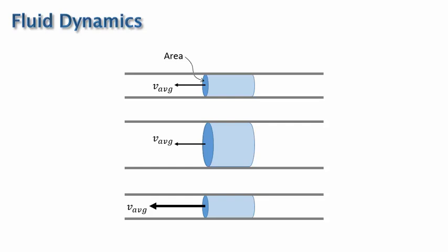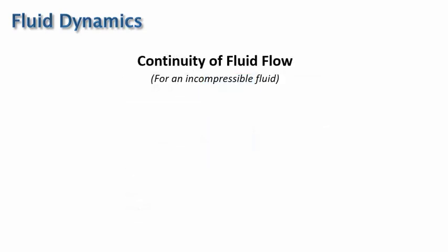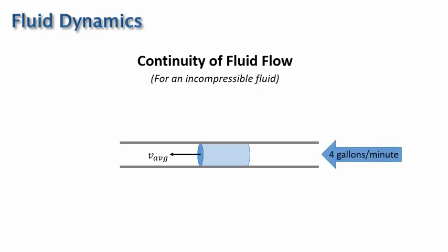Now that we've defined flow rate, let's discuss the continuity of fluid flow, specifically for an incompressible fluid. Let's think about a fluid flowing through a pipe. Say there are four gallons of water flowing into this pipe every minute. Then there better be four gallons of water flowing out of the pipe every minute as well, because if more water flows into the pipe every minute than flows out, it would build up in the pipe. And this can't happen if the fluid is incompressible.